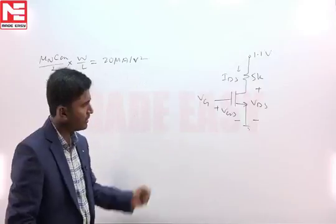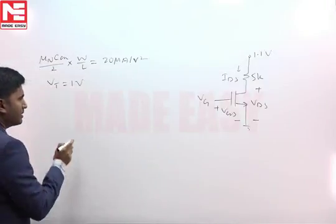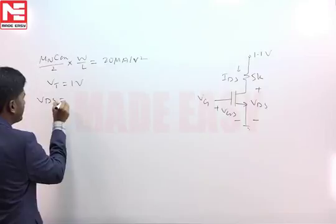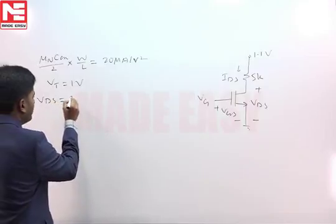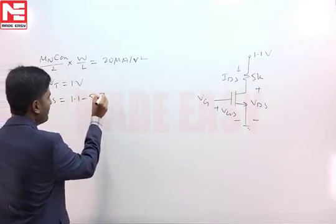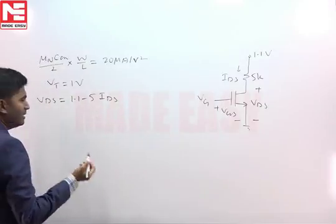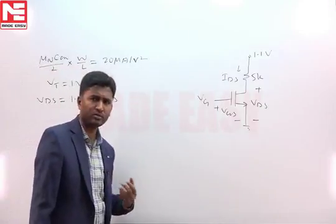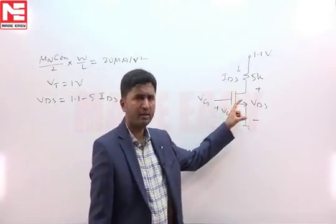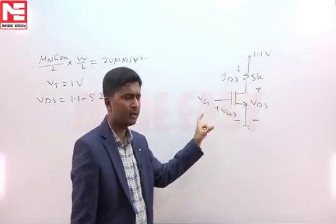From the circuit diagram, I first write here VDS drain to source voltage that will be equal to 1.1 minus 5 IDS. And we want MOSFET to remain in saturation. If MOSFET is to remain in saturation, that VDS should be greater than or equal to VGS minus VT.